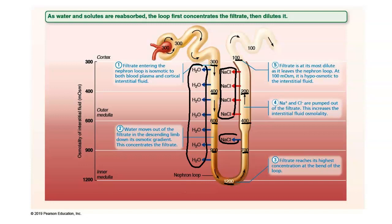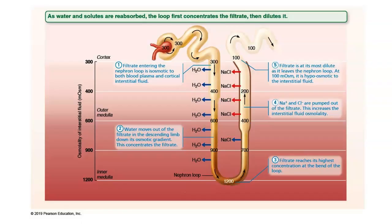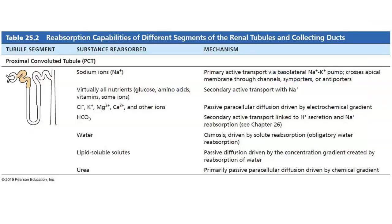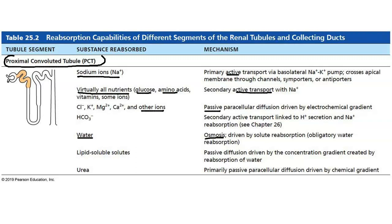By the time the filtrate hits the distal convoluted tubule, most reabsorption has occurred. To summarize, looking at a chart from the book: in the proximal convoluted tubule, about 70% of sodium is actively reabsorbed. Glucose and amino acids are taken back by active transport — we want to take those nutrients back. When sodium comes back actively, that powers the reabsorption of other ions which follow passively, and water also follows passively by osmosis.